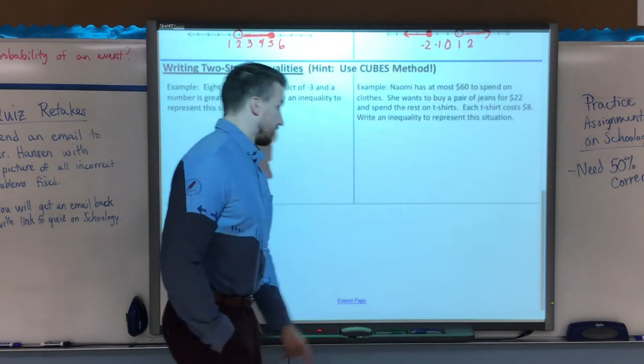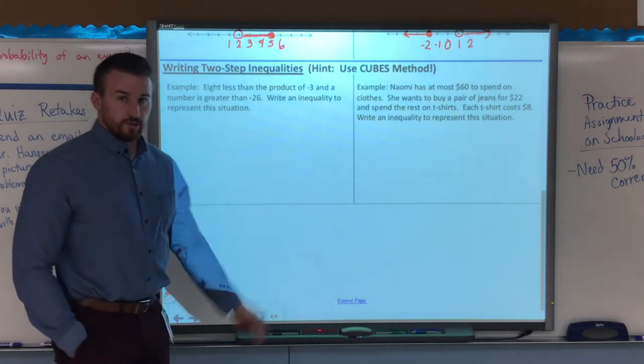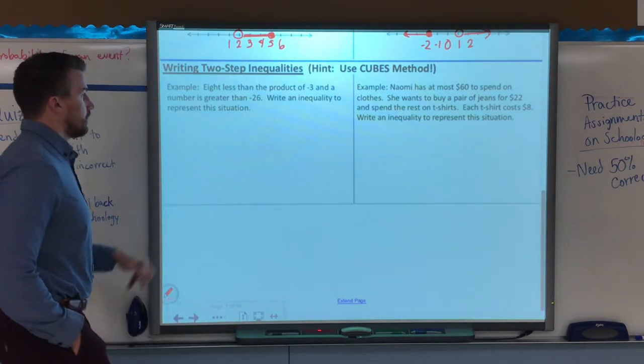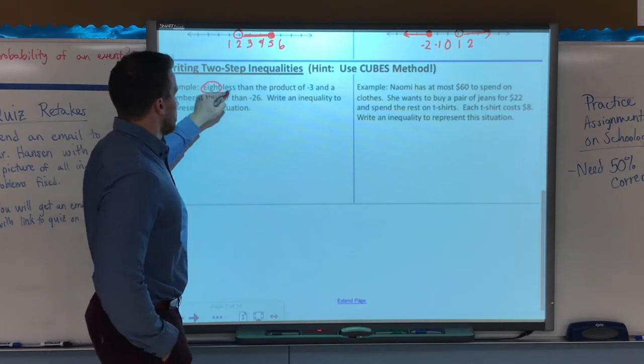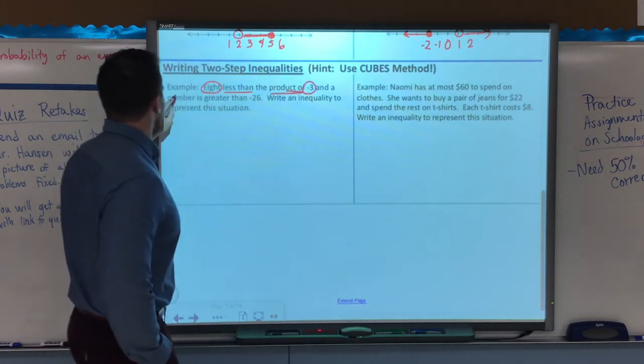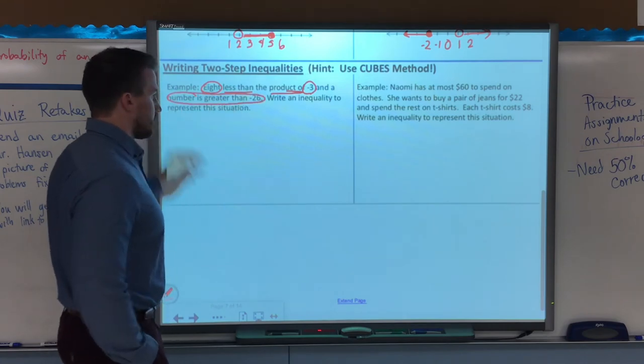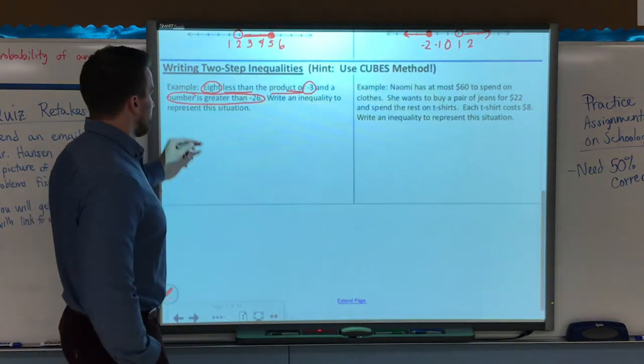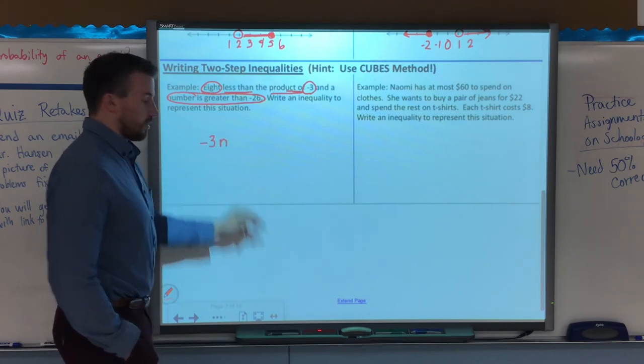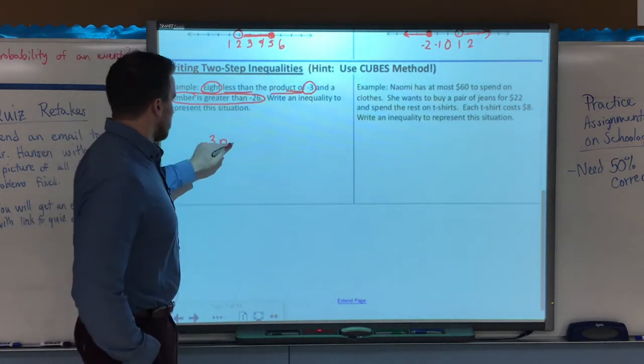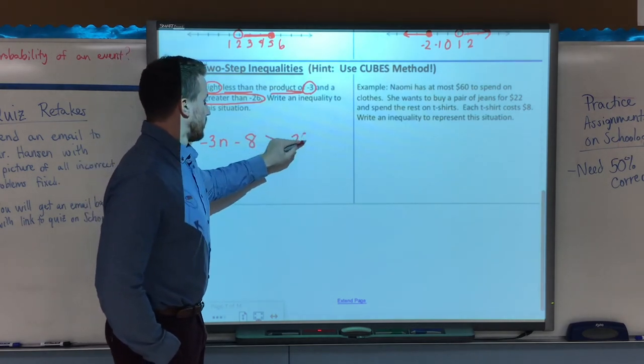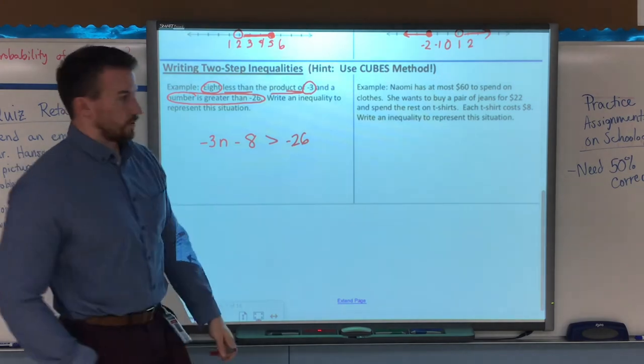Last couple of examples here. To write two-step inequalities, we have to make sure that we're using the CUBES method. So we have 8 less than the product of negative 3, and a number is greater than negative 26. So, the product means negative 3 is being multiplied by a number, we'll call it N, and then we're taking 8 away from that, and saying that it's greater than negative 26.